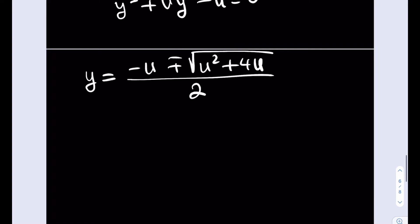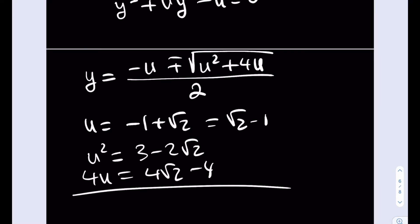So for u equals negative 1 plus root 2, or I can write it as root 2 minus 1. Let's calculate this. u squared is going to be this squared plus this squared minus 2ab. That's going to give me 3 minus 2 root 2. And then 4u is going to be 4 times that, 4 root 2 minus 4. If I add those up, I'm going to be getting negative 1 plus 2 root 2, or 2 root 2 minus 1.